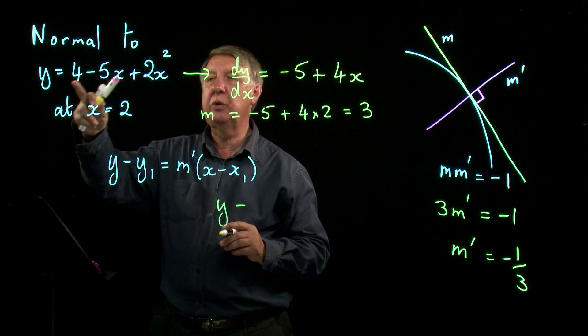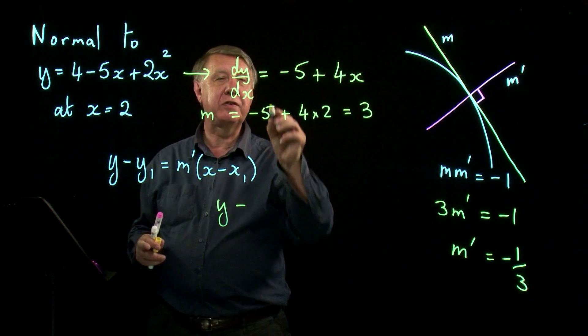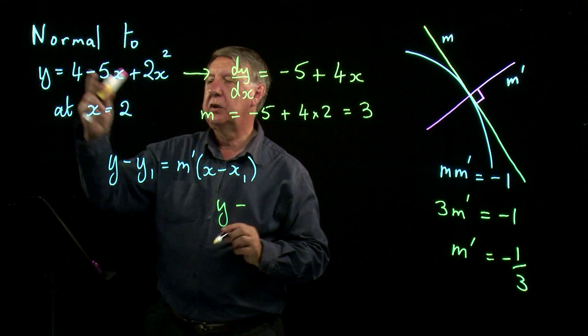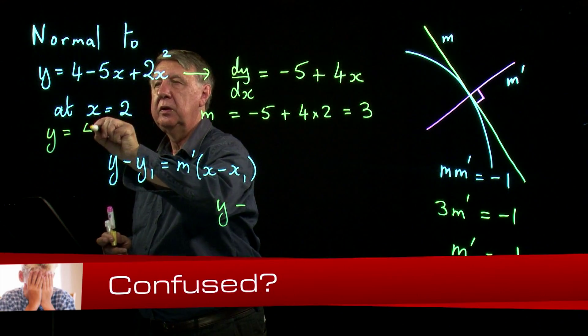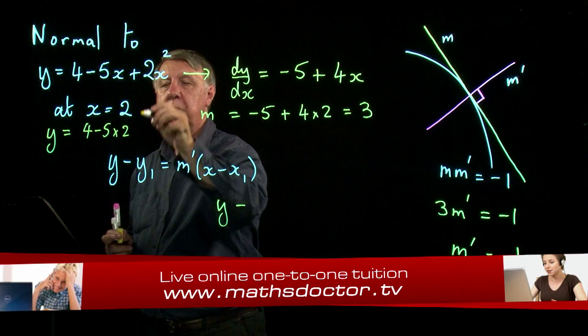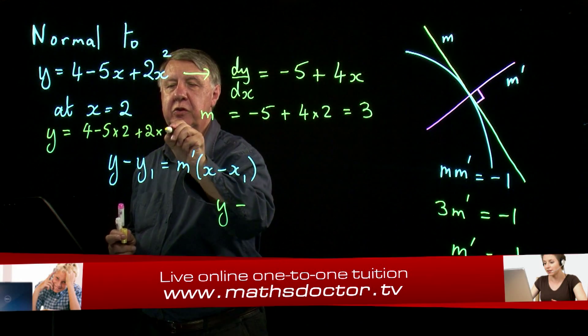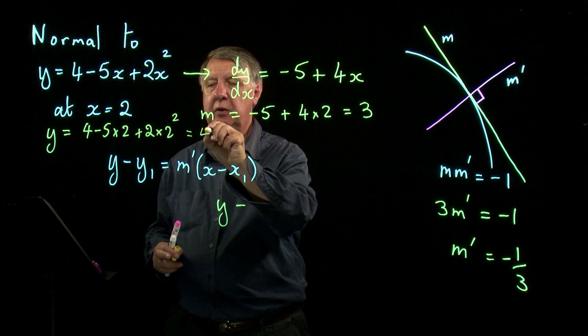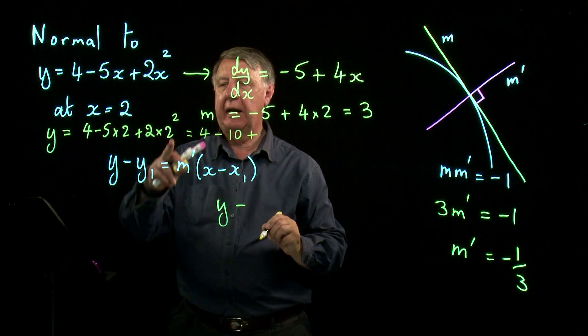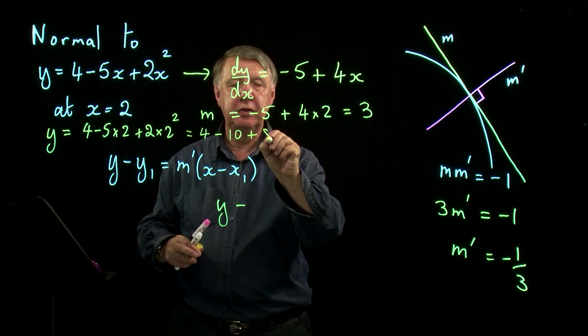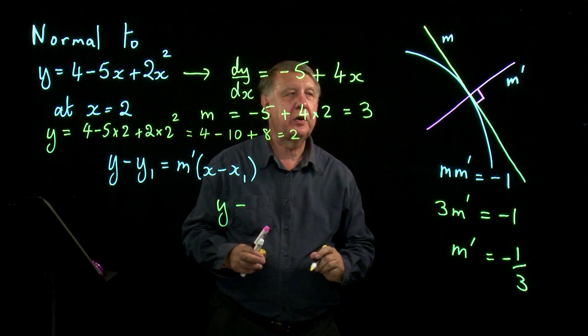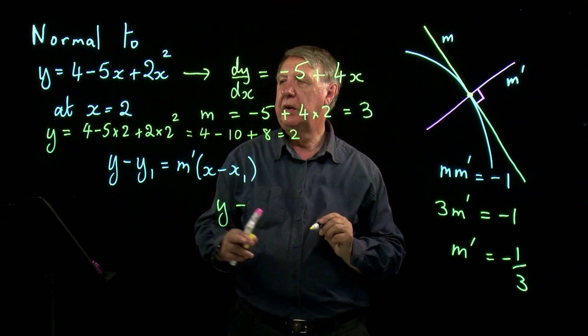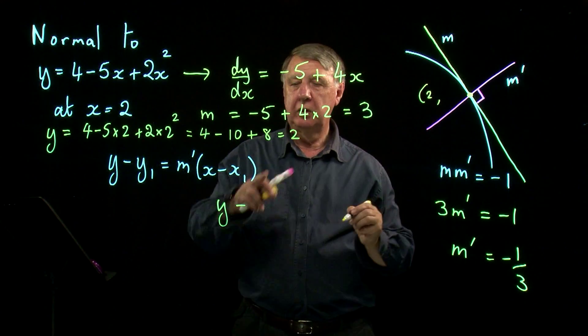So if I substitute x equals 2 in here, instead of here, I won't get the gradient, I will actually get the y coordinate. So if I put x equal to 2, 4 minus 5 times 2 plus 2 times 2 squared, then I get 4 take away 10 add 8 which is 2. So the point on the graph that I'm talking about, my point here, is 2, 2.